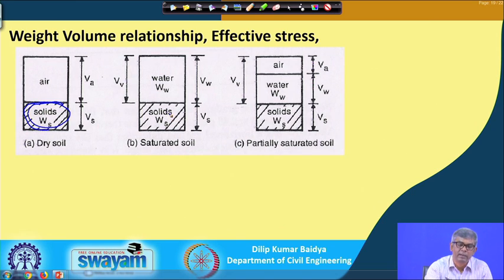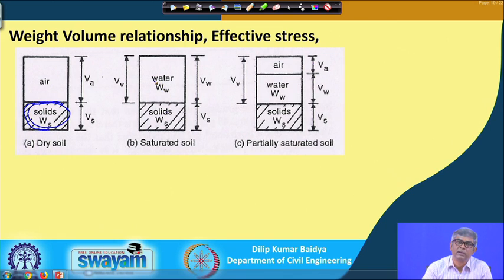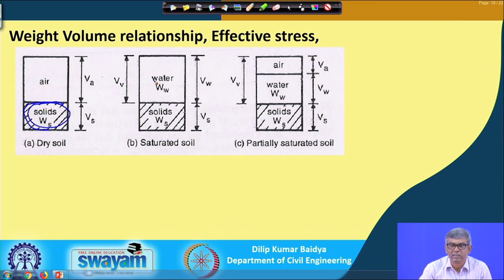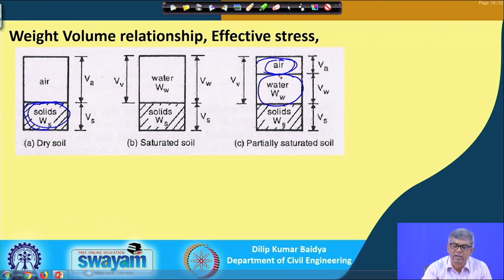This is a saturated soil. Whatever is present — whether water or air — we generally call it a void. Within the soil mass, whatever voids are there can be either filled up by air or by water. Both are 2-phase diagrams when completely dry or completely saturated — either water-solid or air-solid. But in most cases, soil will be in 3 phases: partly filled by air, partly by water.